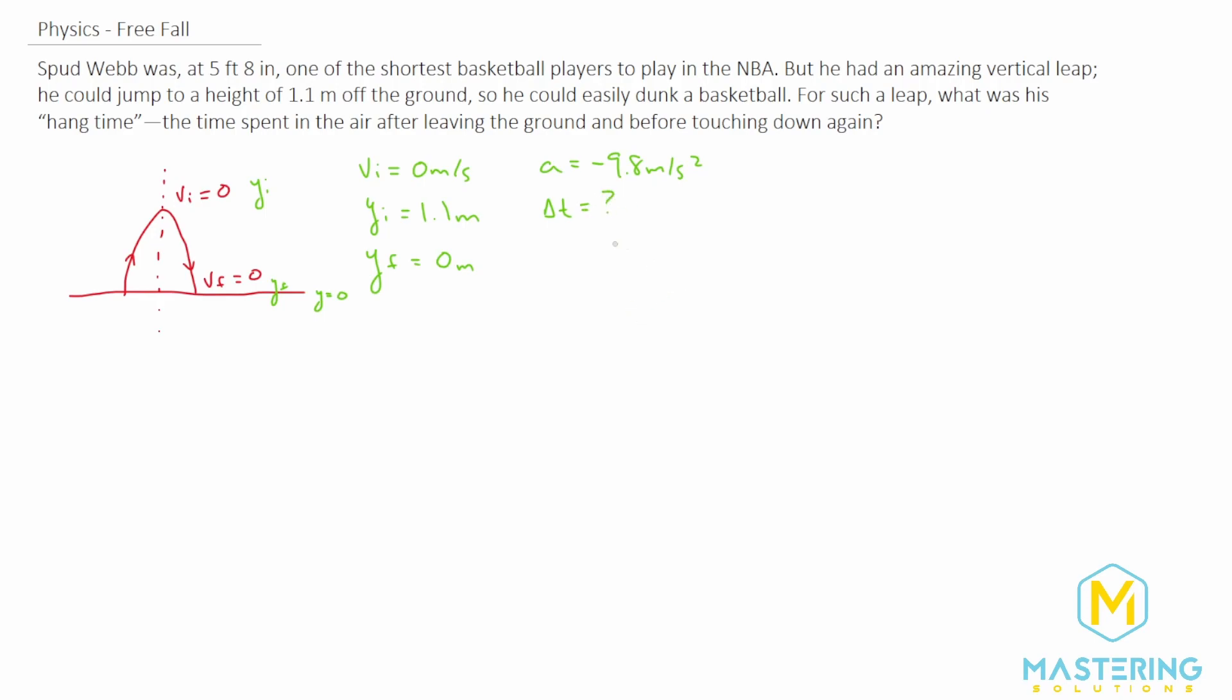We need to find an equation that has all of these variables in it without any variables that we don't know. So it can't have the v final, because we're not sure what that is. So the one that we'll be using is y final equals y initial plus velocity initial times time plus one half times acceleration times the time squared.